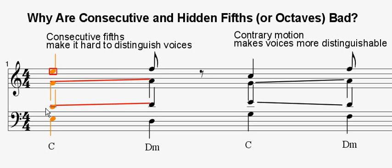In this example, only the alto and tenor are being sounded to highlight the effect. Contrary motion, on the other hand, distinguishes the two voices one from the other.